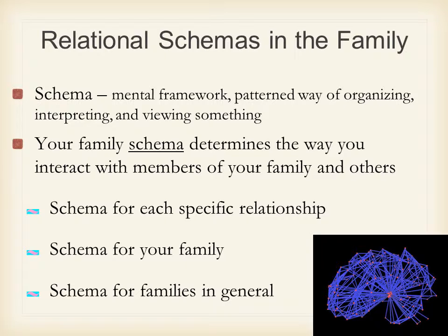In the absence of the first two layers — a specific relationship schema or a schema for your own family — you fall back on that general sense of what a family is supposed to look like. That's why, no matter how weird your family is, if you go out in public you're likely to uphold the general schema. You try to pretend you're a normal family. The truth is, everybody has weirdness — every family has their own specific ways of interacting.